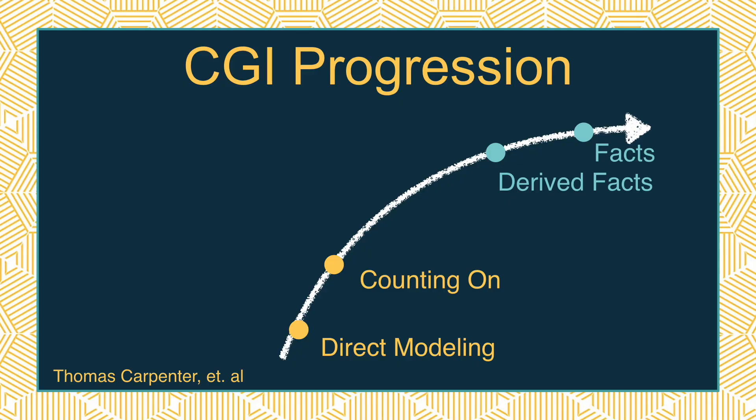The in-between phase is really where that flexibility Susan Jo Russell talked about comes into play. The in-between phase is called derived facts — this is where kids are using something they know to help them with something they don't know. For three plus four, a kid might say, well, three plus three is six, and so one more gives me seven. For three times four, they may know that two times four is eight, and they just need one more four. That's what flexibility is all about.